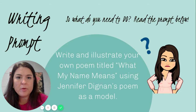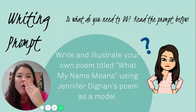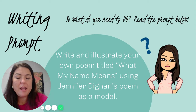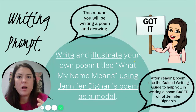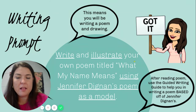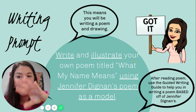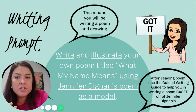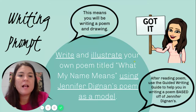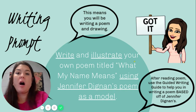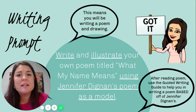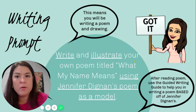The first thing is you need to look at the writing prompt. It says write and illustrate your own poem titled 'What My Name Means' using Jennifer Dignan's poem as a model. So the very first thing is you look at that prompt and figure out what you've got to do. I break it down and analyze it. 'Write' and 'illustrate' are the verbs, so I'm going to be writing a poem and drawing some things. And using Jennifer Dignan's poem as a model means I'm going to use the guided writing guide to help me write another poem based off of that poem.